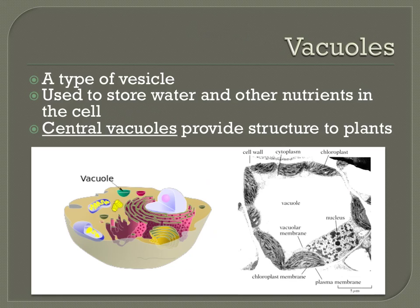Vesicles expelled from the Golgi can move materials out of the cell. Vacuoles, on the other hand, are a type of vesicle found within cells that play a large role in storing water and other nutrients. Animal cells possess many small vacuoles. Plant cells possess a specialized vacuole called a central vacuole that, in addition to storing water and nutrients, increases the rigidity or structure of the cell. Plant cells will actually wilt when low in water, because water from the central vacuole that normally provides pressure against the cell wall can no longer do so.